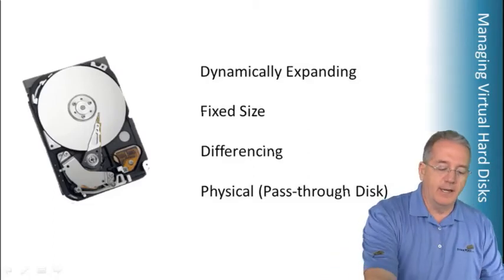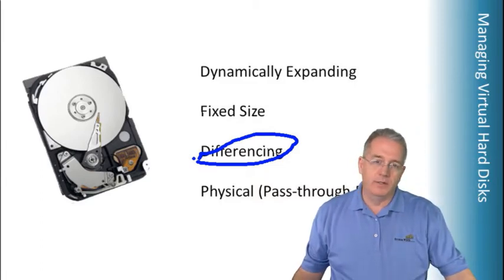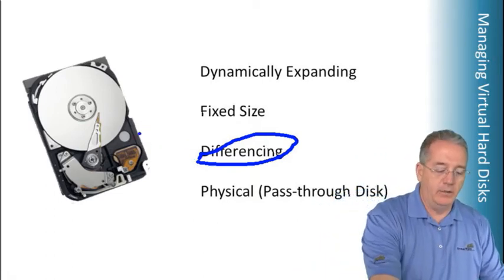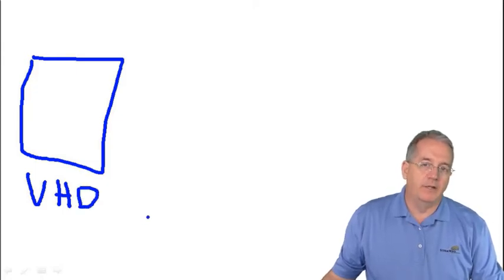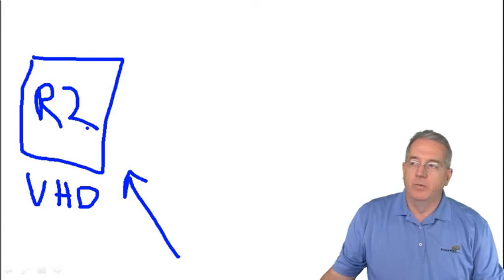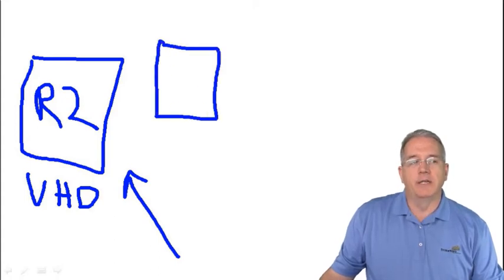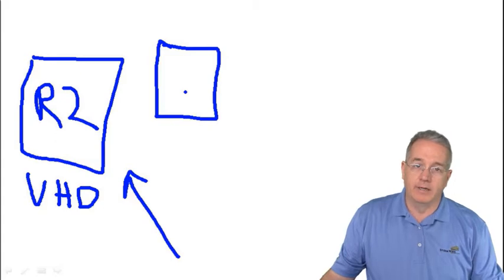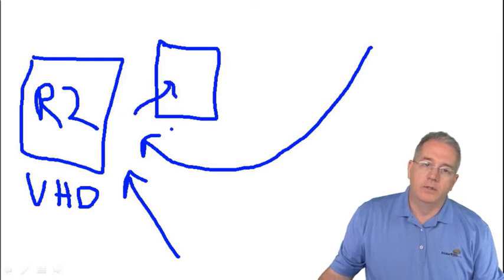Now let's talk about differencing disks — these are covered on page 180. You have a baseline VHD; for example, one with Windows 2008 R2 installed. You don't really want to make modifications to that baseline operating system, so what you can do is associate a differencing disk to this baseline disk. Once you've made that association, any changes go to the differencing disk instead of the baseline disk.